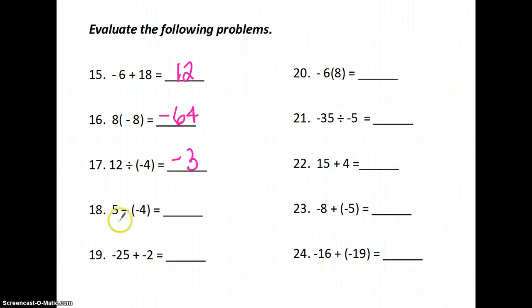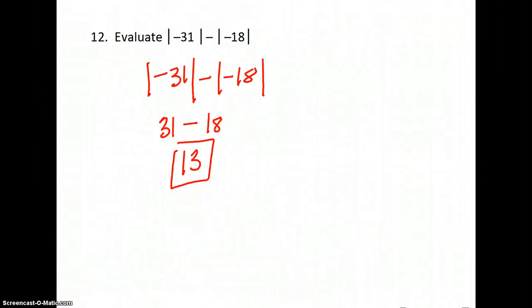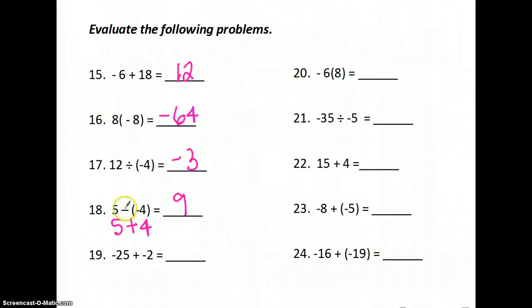5 - (-4). If I want to keep, flip, change, I keep, I flip, and I change. 5 + 4 is 9. You can also notice that if there's two negatives next to each other, you can make a cross and make those a positive.